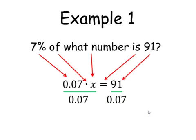I don't know what 91 divided by 0.07 is off the top of my head. So grab your calculator and you will find that x is equal to 1,300. So we can then say that 7% of 1,300 is 91.